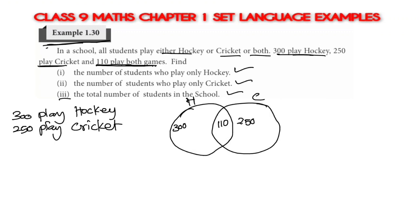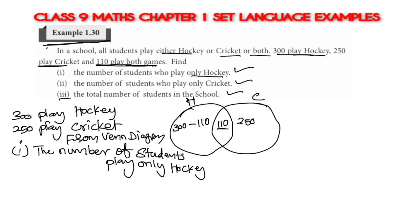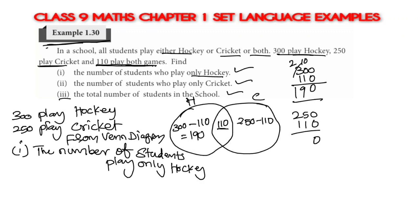First question: number of students who play only hockey. How many people play hockey? 300. We will subtract 300 minus 110. 0 minus 0 is 0, borrow — 10 minus 1 is 9, 2 minus 1 is 1. The number of students who play only hockey equals 190.